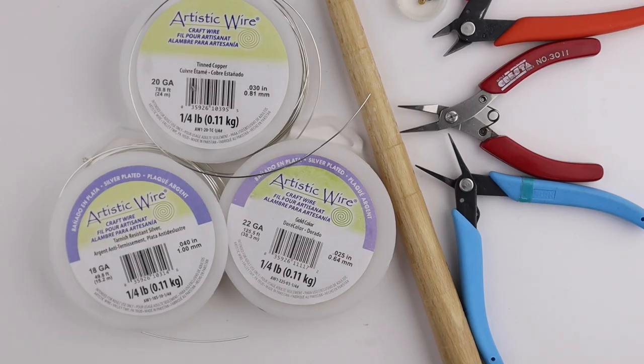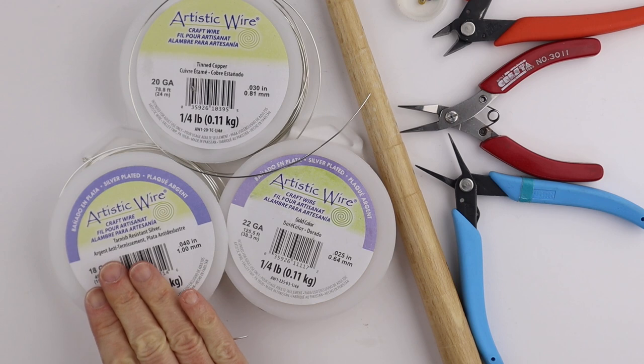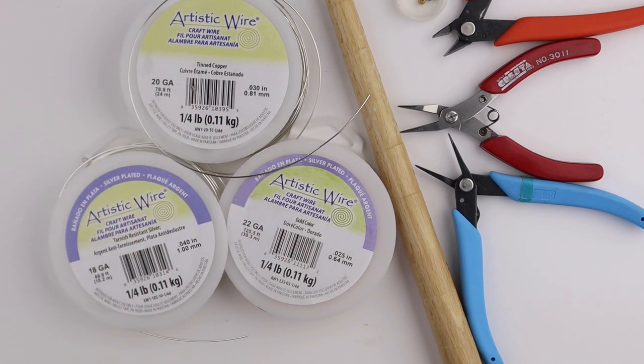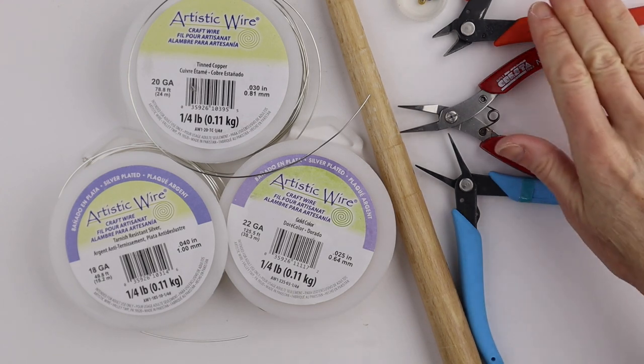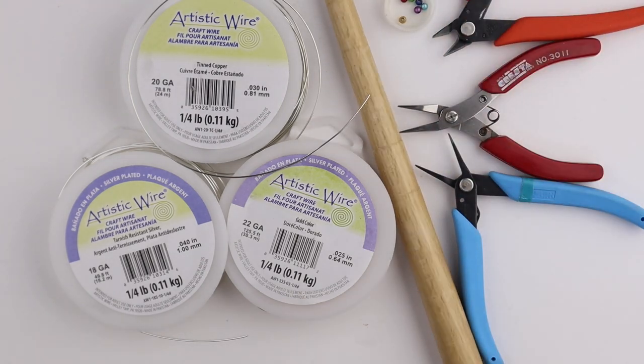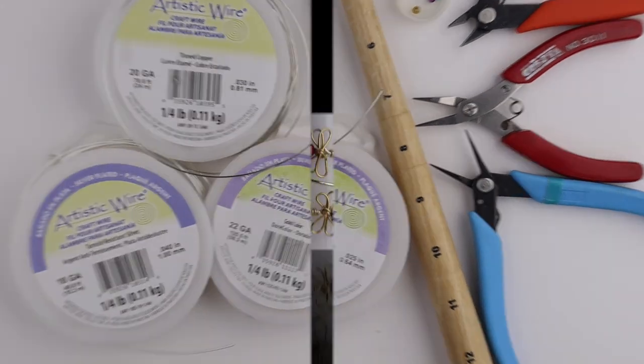What you're going to need for this project is your wire. I have 18, 20, and 22 gauge wire. I have my flat pliers, round pliers, cutters. I have 4mm miracle beads and my stepped ring mandrel.